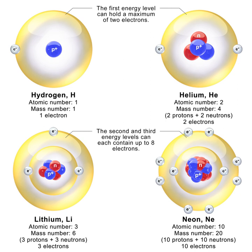The neutron is a subatomic particle, symbol n or n0, with no net electric charge and a mass slightly larger than that of a proton. Protons and neutrons constitute the nuclei of atoms. Since protons and neutrons behave similarly within the nucleus, and each has a mass of approximately one atomic mass unit, they are both referred to as nucleons.